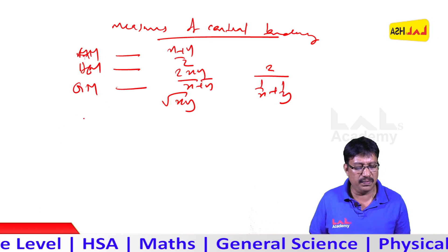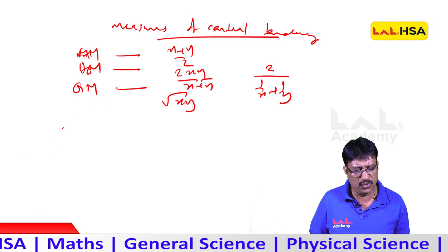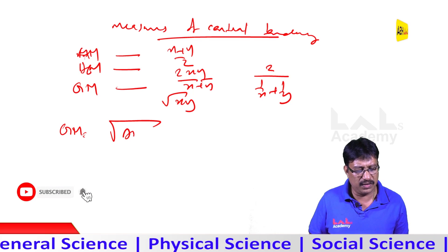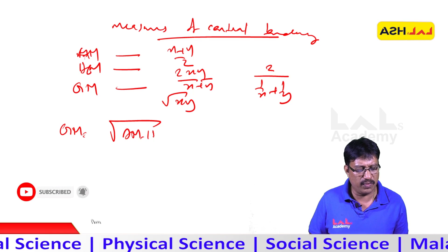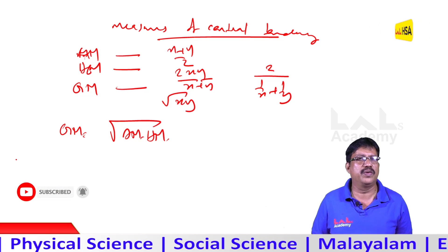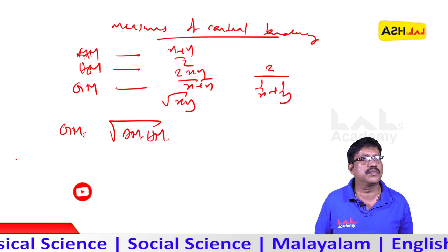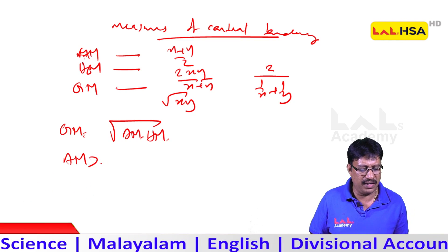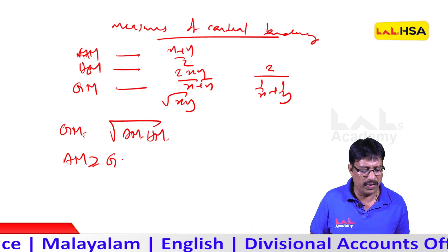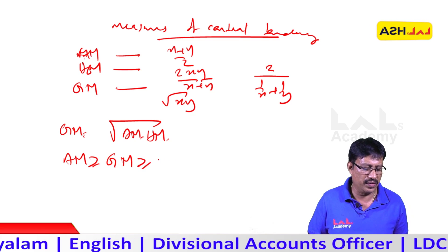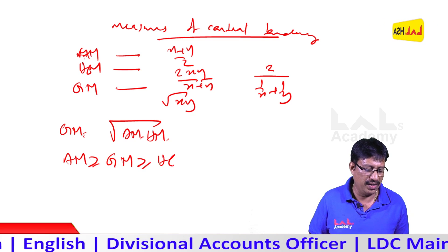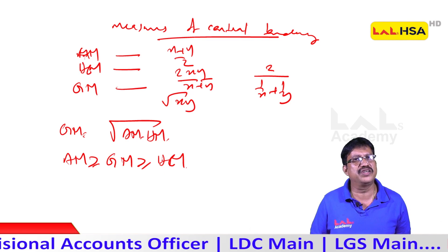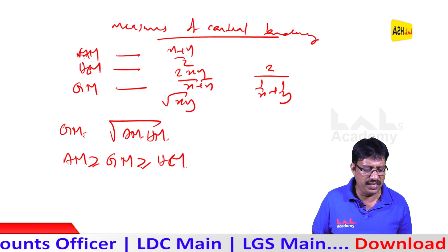The arithmetic mean is greater than or equal to the geometric mean, which is greater than or equal to the harmonic mean. This relationship is commonly referred to as AGM or AGH.